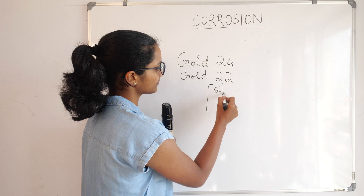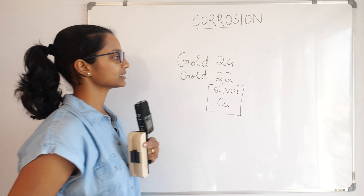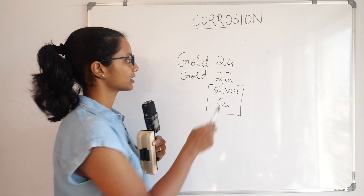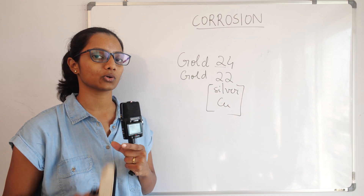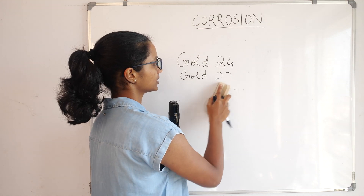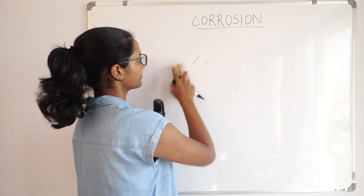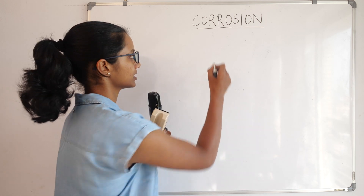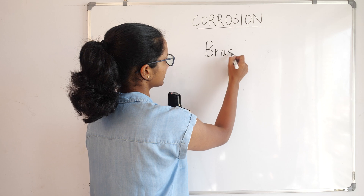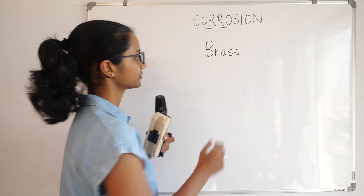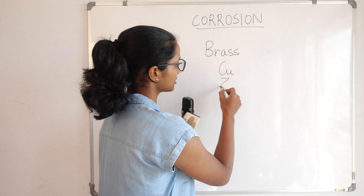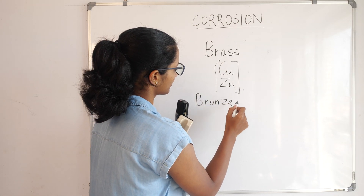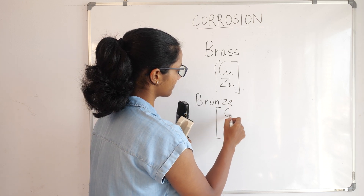Gold is mixed with copper or silver to make it 22 karat — that is an alloy. 22 karat gold has 22 parts of gold and 2 parts of another metal, while pure gold is 24 parts. Alloying is a very good preventive method. For example, brass is an alloy of copper and zinc, and bronze is a homogeneous mixture of copper and tin.